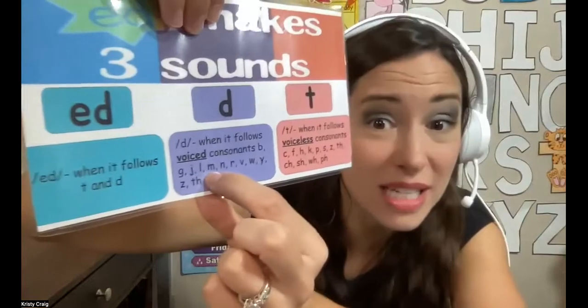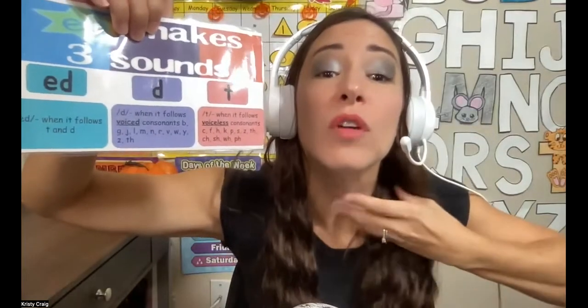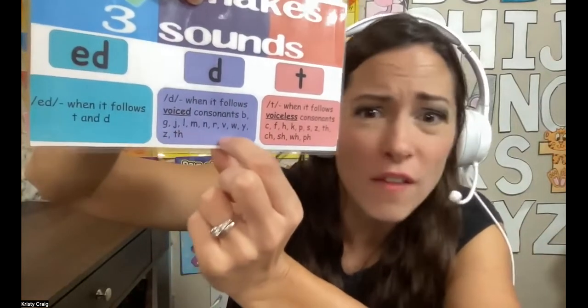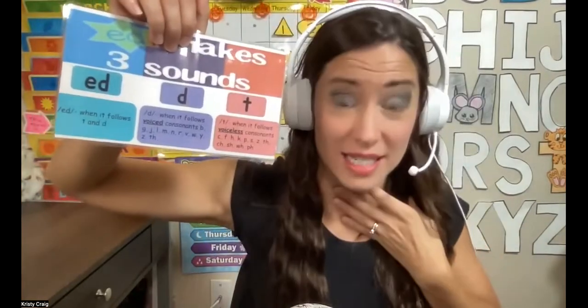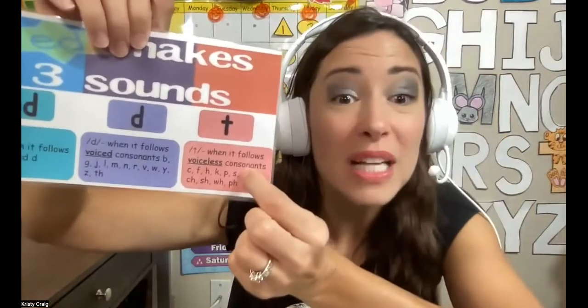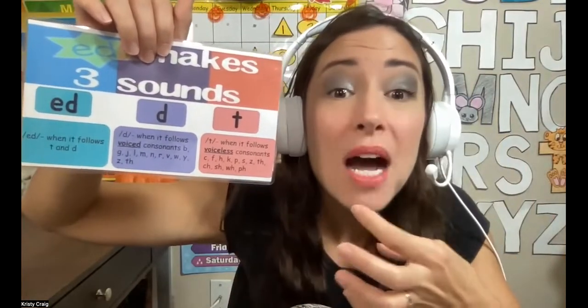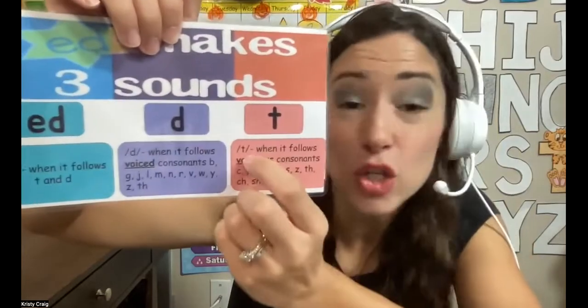If it's a voiced sound, you can feel your vibration — because the letters G, J, L, M, N, R, V, W — all of these are voiced. We're going to give it that dirty diaper D sound. If it's a voiceless sound and you don't hear your voice, we're going to give it that T sound at the end of the word.